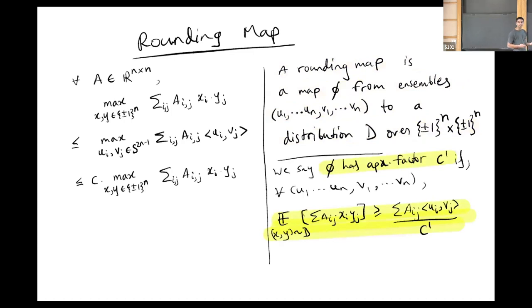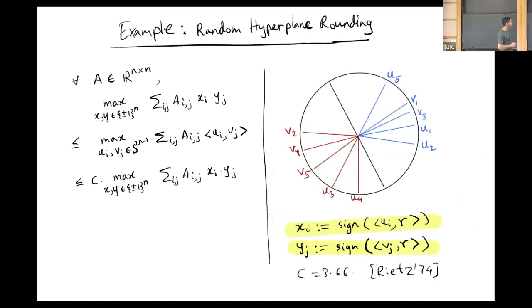We say that such a map has approximation factor C prime if for every ensemble of vectors, the expected bilinear form over this distribution is at least the high dimensional value divided by C prime. The existence of any such map gives you a proof of the inequality. The first inequality is trivial because we can always substitute UI as XI times the elementary vector E1 and VJ as YJ times E1. But the second inequality is non-trivial and is implied by such a map.